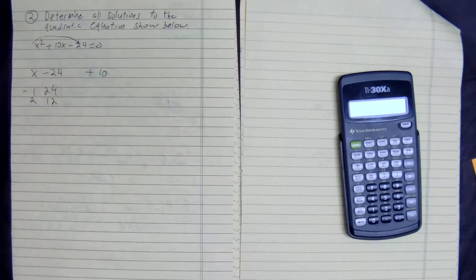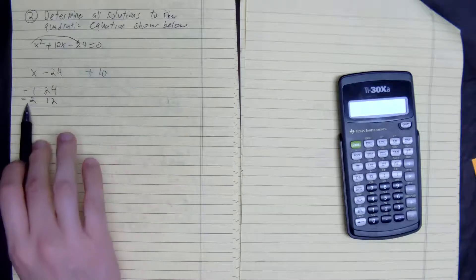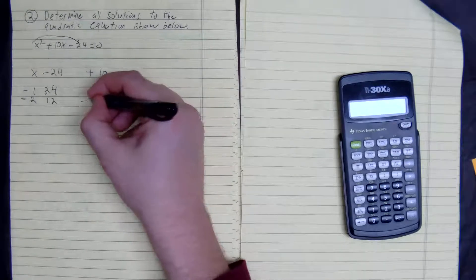2 and 12, this is a good one. Well, we need it to be positive, so the smaller number has to be negative. Negative 2 times 12 is negative 24, and 12 minus 2 is going to be equal to 10. So this is our ticket.